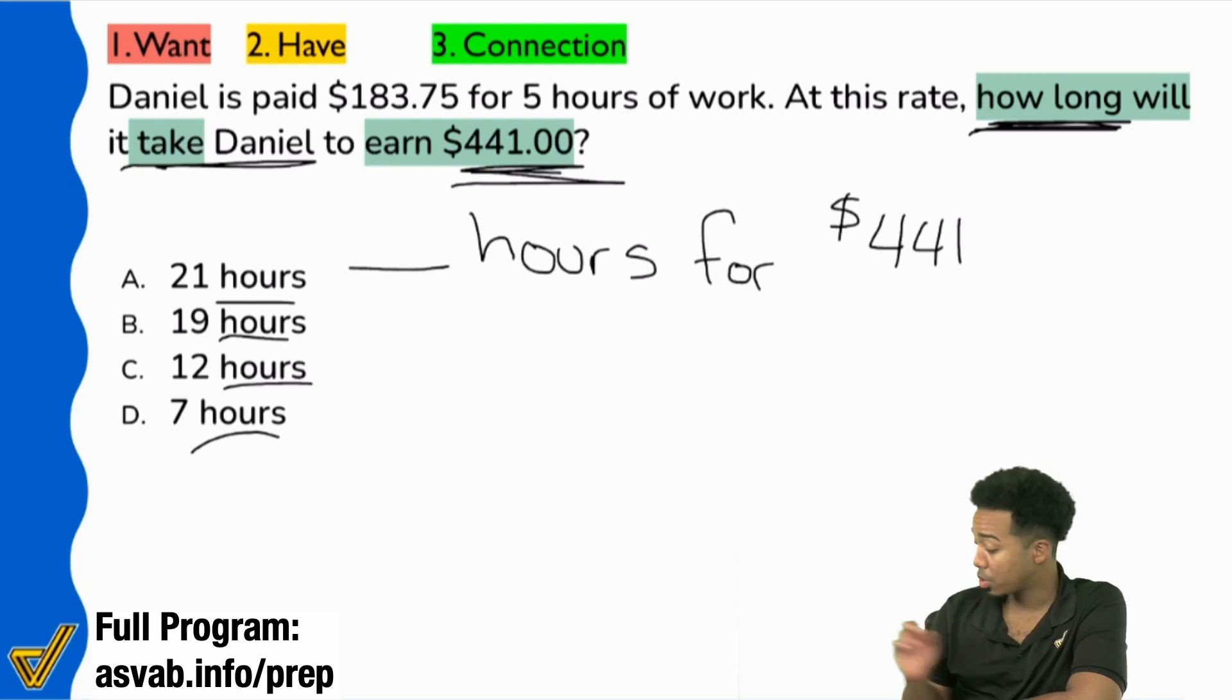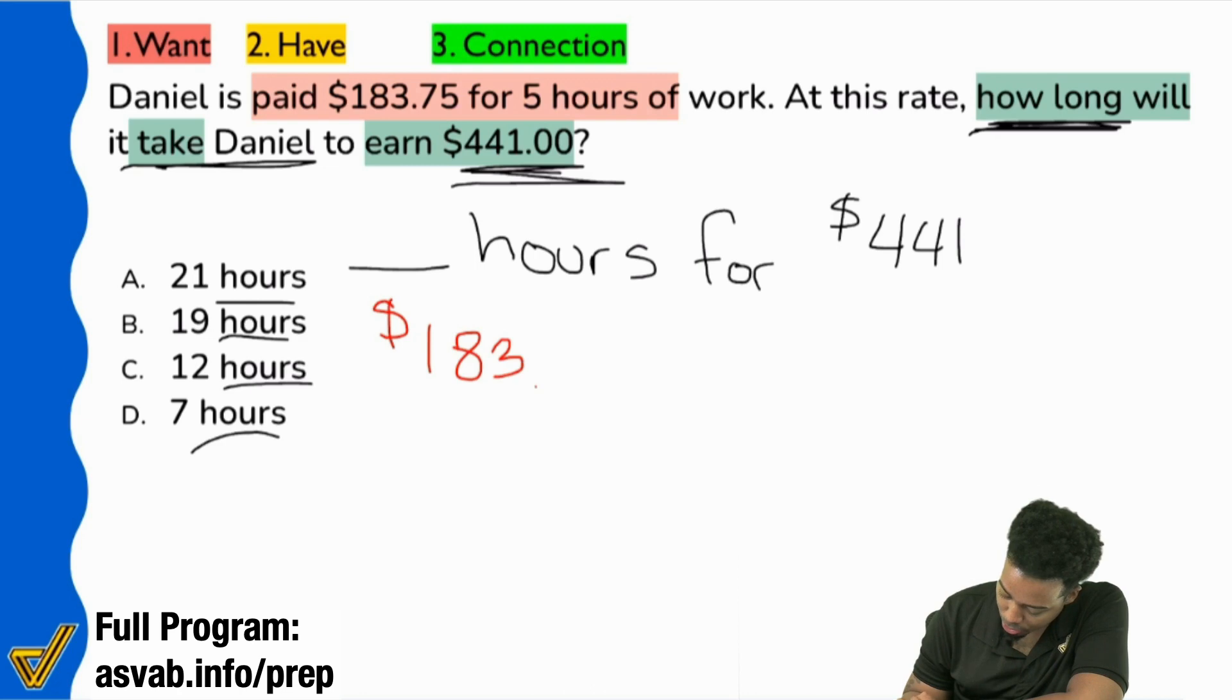Perfect. So here's what we're going to look at next. We're going to take a look at this information here where it says Daniel's paid this much money, $183.75 for five hours of work. So I'm going to write that down. I'm going to say $183.75 for five hours.